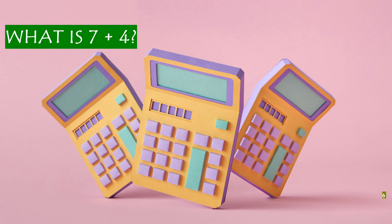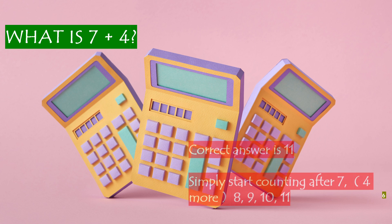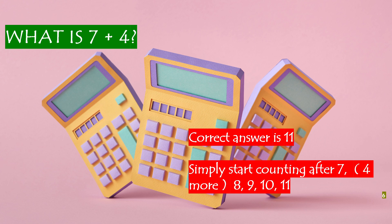What is 7 plus 4? The correct answer is 11. Simply start counting after 7 — 4 more: 8, 9, 10, 11.